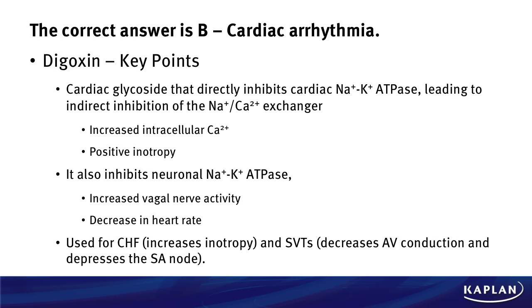This increases intracellular sodium and calcium, which gives the positive inotropic properties of digoxin. It also inhibits neuronal sodium-potassium ATPase, which increases vagal nerve activity and thus will decrease the heart rate.